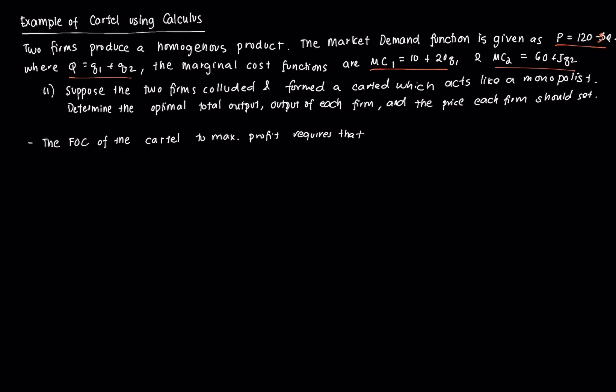If you recall from our discussion, the first order condition of the cartel to be able to maximize profit requires that the cartel be able to allocate production between the two member firms so that the marginal costs are equal and the total marginal cost equals the cartel's marginal revenue. And mathematically, it requires that the marginal revenue of the cartel should be equal to the marginal cost of firm 1 should be equal to the marginal cost of firm 2 should be equal to the total marginal cost of the cartel. They should all be equal.